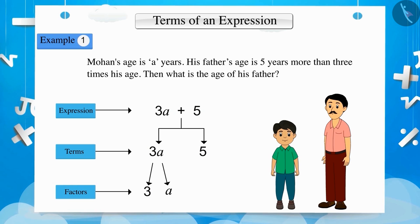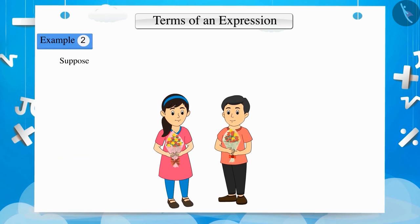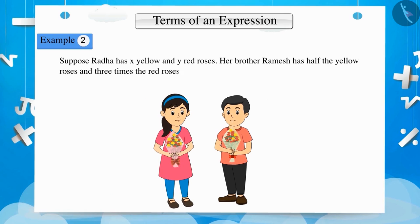Now, let's understand another example. Suppose Radha has X yellow and Y red roses. Her brother Ramesh has half the yellow roses and 3 times red roses than Radha. So, how many roses does Ramesh have?